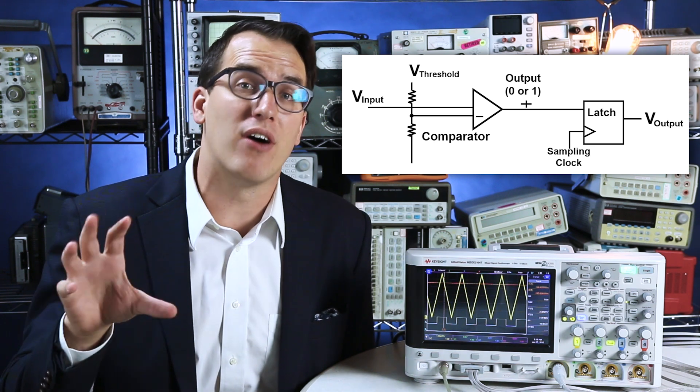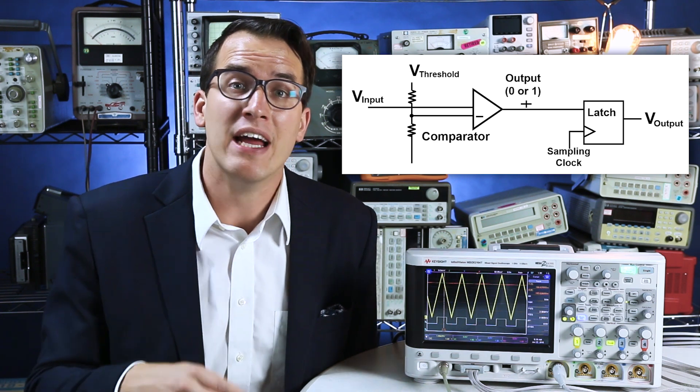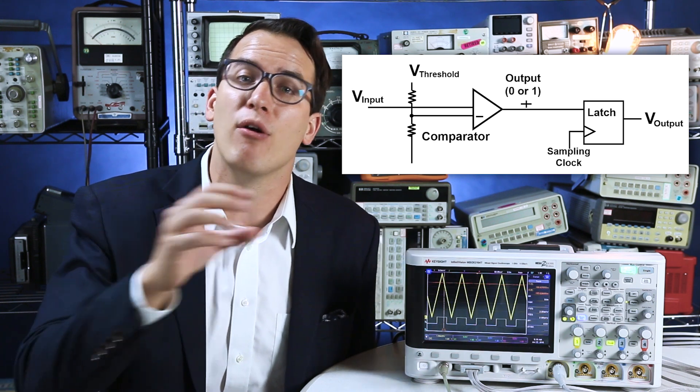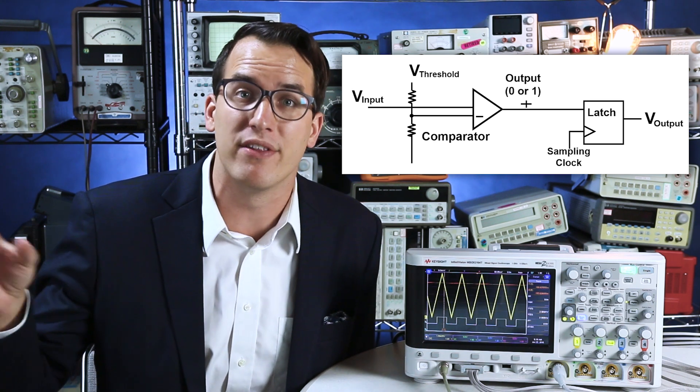The output of the comparator is then fed into a latch with the oscilloscope sampling clock. Each time there's an edge coming into that latch from the sampling clock, the latch reads the value from the comparator and ultimately outputs the zero or the one.